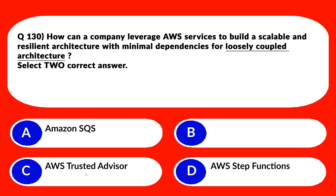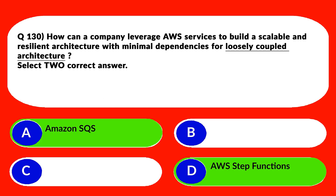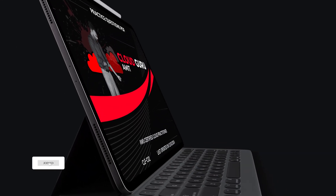Quick tip for the exam: whenever you see the keyword 'loosely coupled' in a question, look for options containing SQS. SQS is very commonly associated with loosely coupled architecture and will also appear frequently in the Solutions Architect Associate exam. We'll keep the two options containing SQS and lock them as the correct answers.